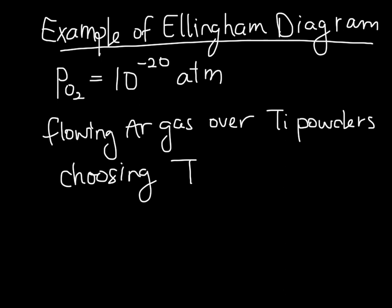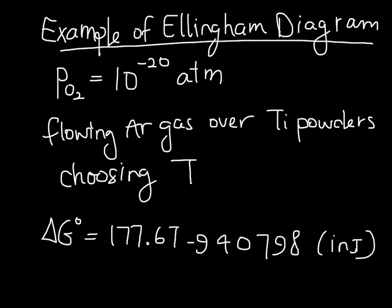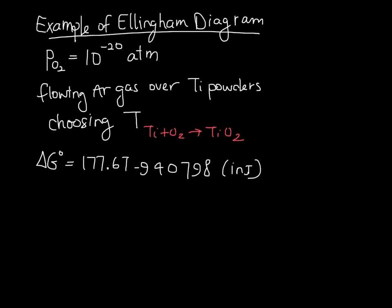In order to solve this, we need to know that for this reaction, delta G is given by 177.6T minus 940,798, and this is in joules. This is for the reaction Ti plus O2 forming TiO2. We know that delta G is equal to RT ln of PO2.